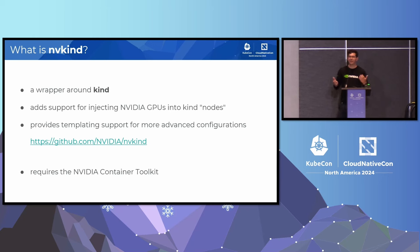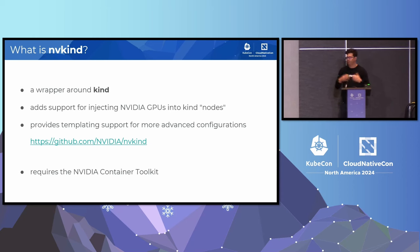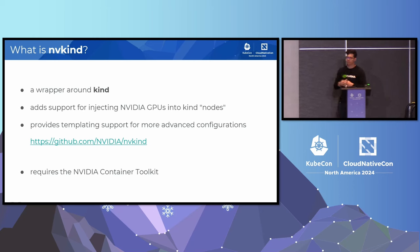What about EnvyKind, which is this tool that we've built? It's a wrapper around Kind and adds support for injecting NVIDIA GPUs into Kind nodes. So you have some GPU application, or in our cases, the GPU device plug-in or the new DRA driver that we're building, the GPU operator that you want to test, and you want to have access to a GPU-enabled Kubernetes cluster. It also provides support for more advanced configurations. One note is that it does require the NVIDIA Container Toolkit, which is the magic that makes sure that GPUs are available in these various containers that are started as the Kubernetes nodes.